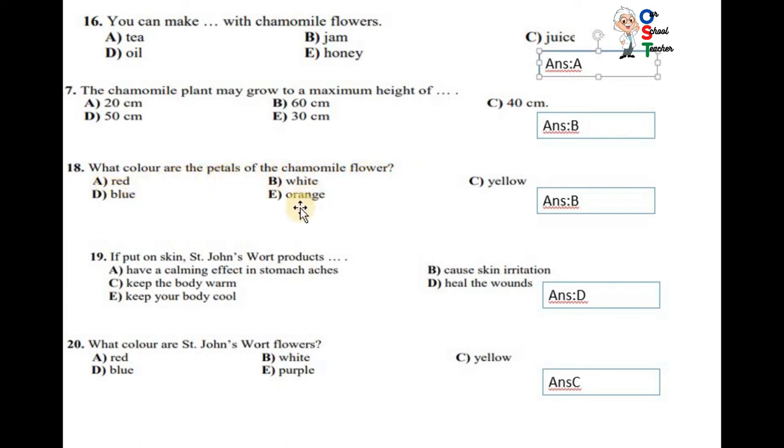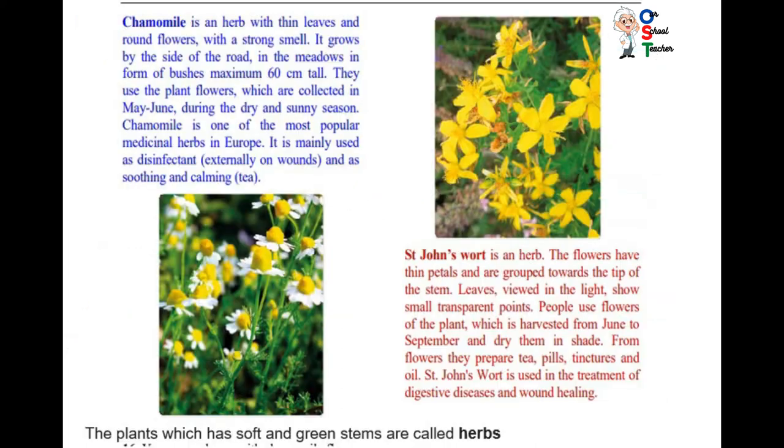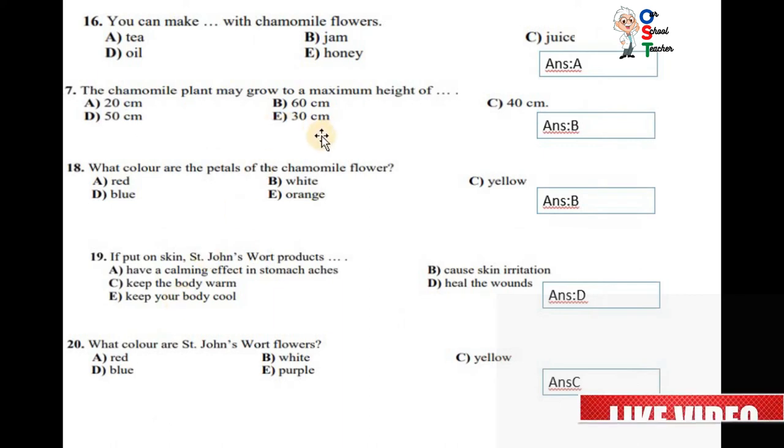What color are the petals of the chamomile flower? Red, blue, white, orange, yellow. White. You can see white. And tea, 60 centimeters tall.